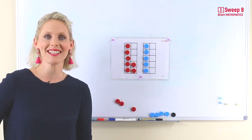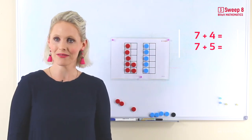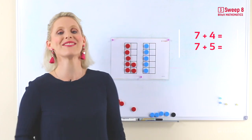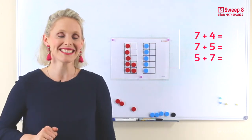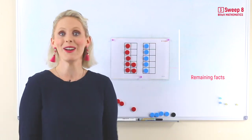Those two number facts are 7 plus 4 and 7 plus 5. The turnarounds. That's right! 5 and 7 and 4 add 7. Now let's learn how to work them out. Easy peasy.